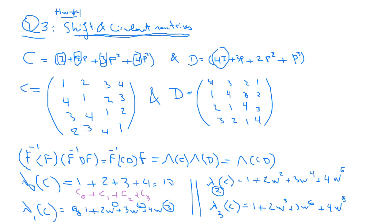Remember the formula says that each eigenvalue lambda K is equal to the sum from K equals zero to N minus one of C_K times W to the appropriate power. You can go back to the slides and take a snapshot if you want to follow along.